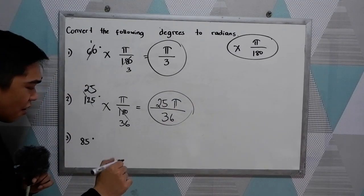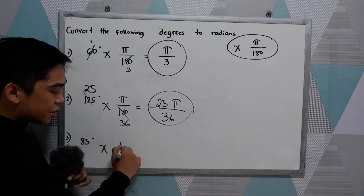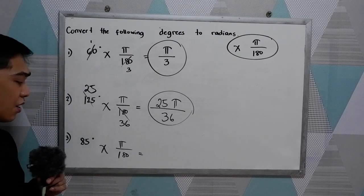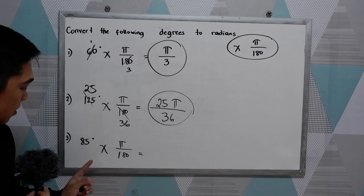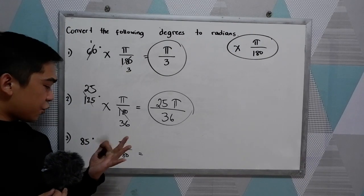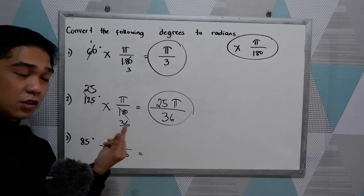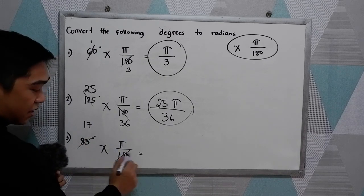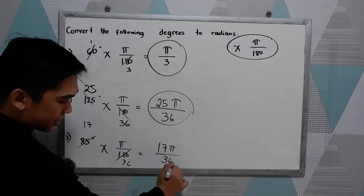And our last example, 85 degrees to radians. So times pi over 180. So they are divisible by 5. So 85 divided by 5 is 17, and 180 divided by 5 is 36. So we have 17 pi all over 36.